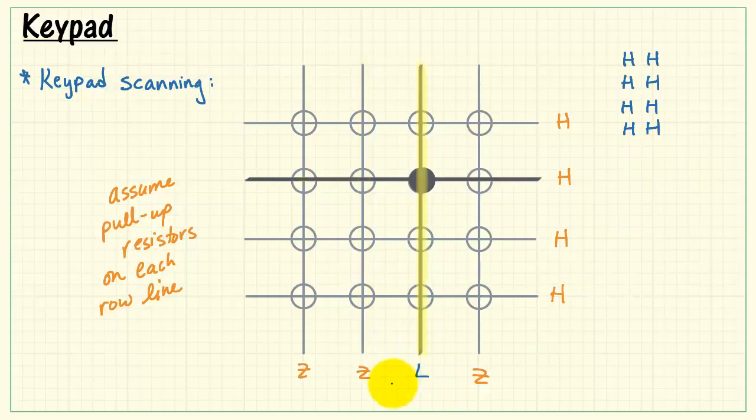Next, I'll advance this to the third column line. The entire line is pulled low, and where we have this switch closure, that also pulls the row line low. Since all the remaining three switches are open, then we observe that the output is this pattern: high, low, high, high. Finally, to complete the scan, we would pull the fourth column line low. Again, all the switches are open. That means we would sense high levels, and that would be the result of our fourth part of the scan.